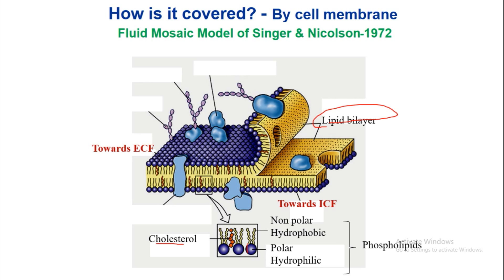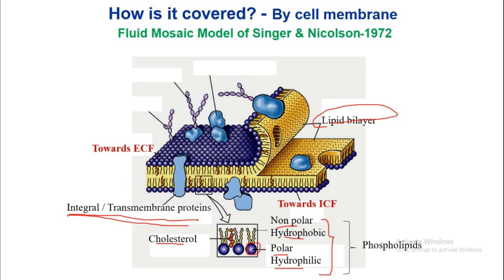The blue roundish structure is the polar hydrophilic end, and these are the non-polar hydrophobic ends of the phospholipids. The blue structure is the polar hydrophilic part, and these are the non-polar hydrophobic parts of the phospholipids. These are the integral transmembrane proteins, which penetrate throughout the cell — part lies outside the cell, part passes through the membrane, and part lies inside the cell.